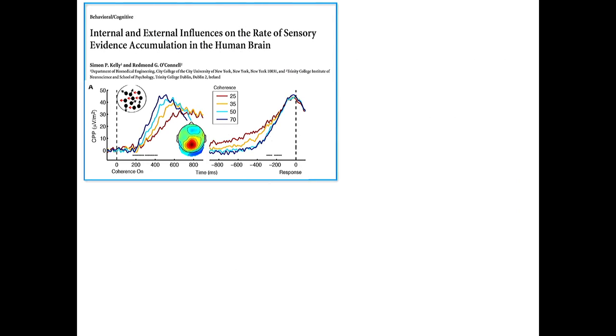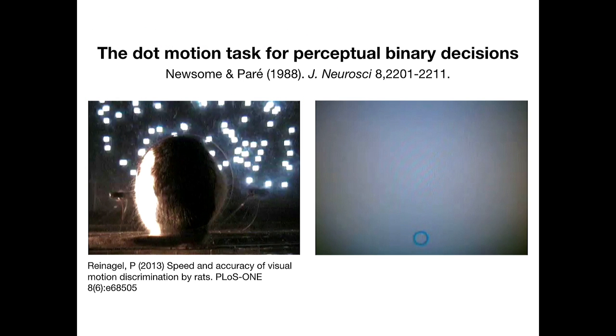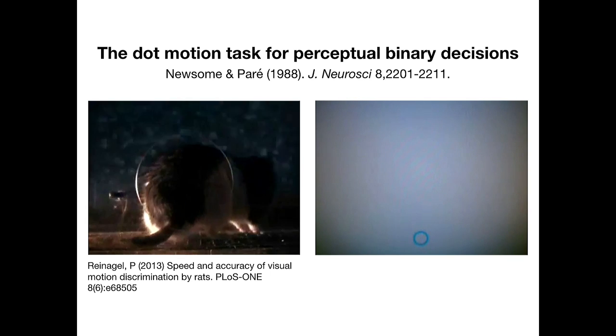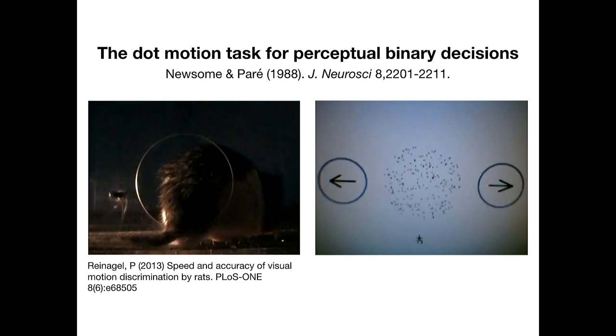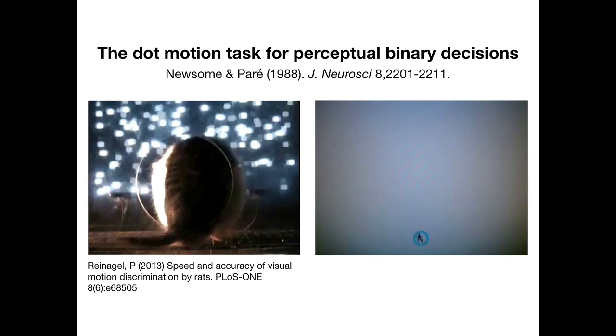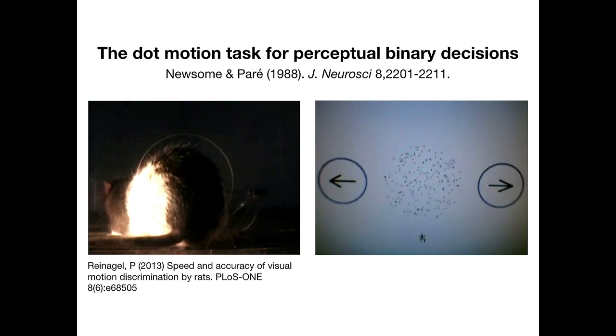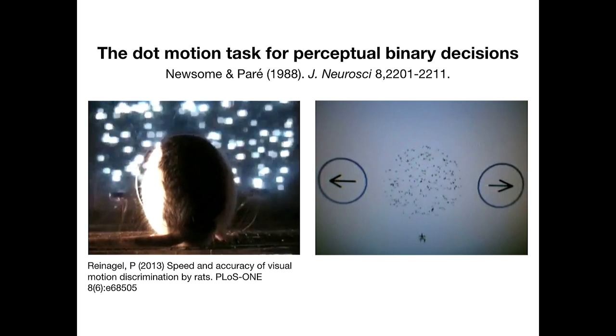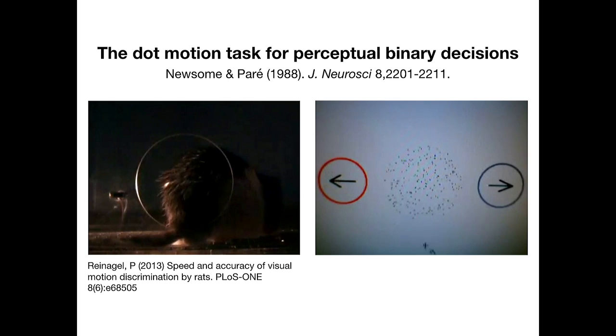This task has been adapted to lots of different organisms over the last 30 years. So here on the left is a rat performing the task. Here on the right is a human, I think. And generally the goal within neuroscience is to record neural activity and try to understand what neural mechanisms underlie perceptual decision-making.